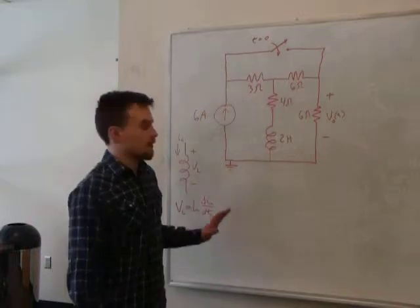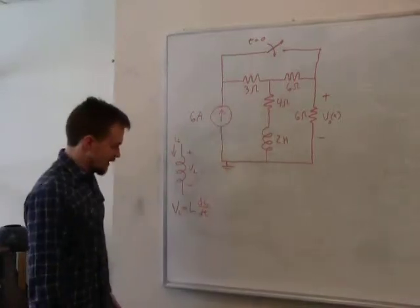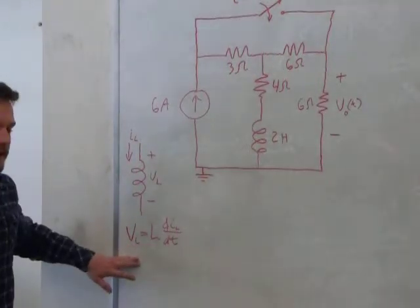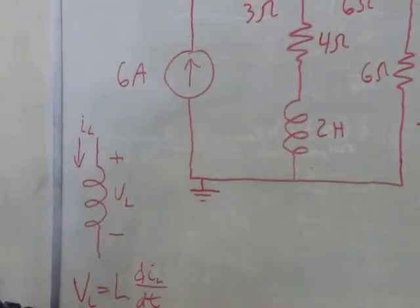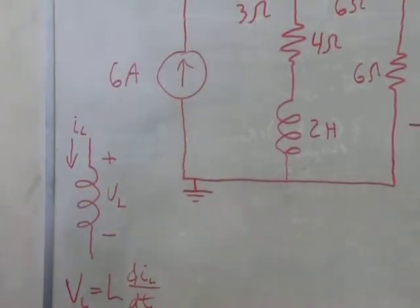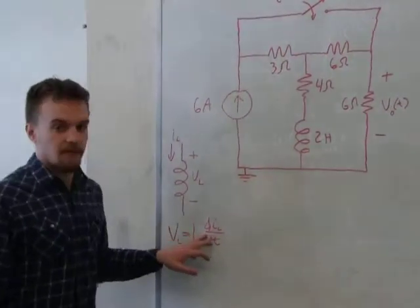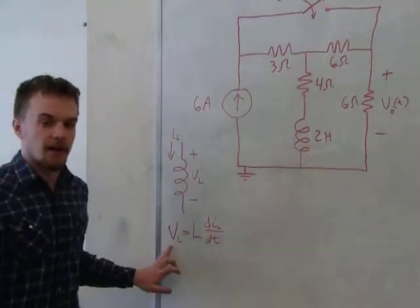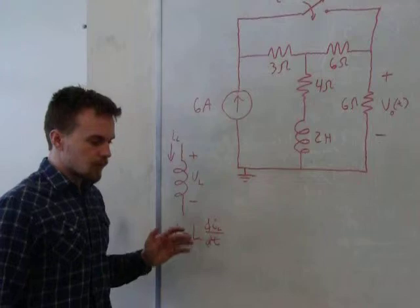Hi, I'm Zach with HKN, and today we are going to solve a problem involving a circuit that has an inductor in it. An inductor's behavior is governed by this equation here, which states that the voltage across an inductor is equal to the inductance L times the time derivative of the current through it. For a DC current, the derivative of the current is zero, so the voltage across it is zero. An inductor is like a short circuit to a DC current.